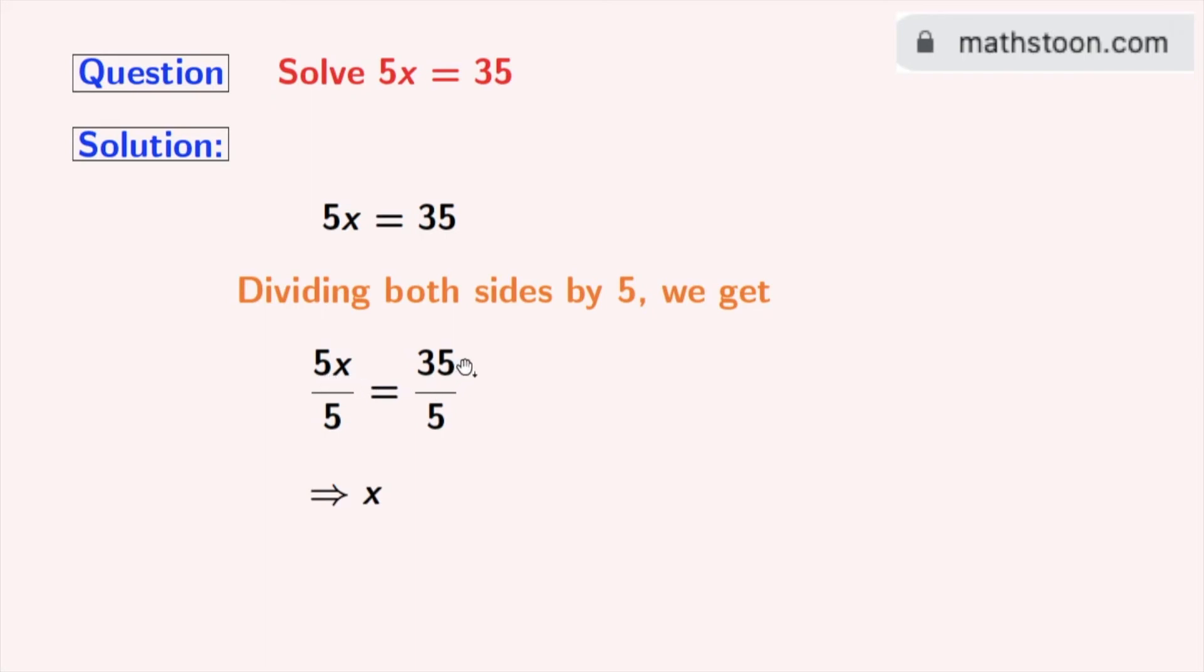And in the right hand side, we have 35 by 5 which is equal to 7. So finally, we get x is equal to 7. And this comes out as our final answer.